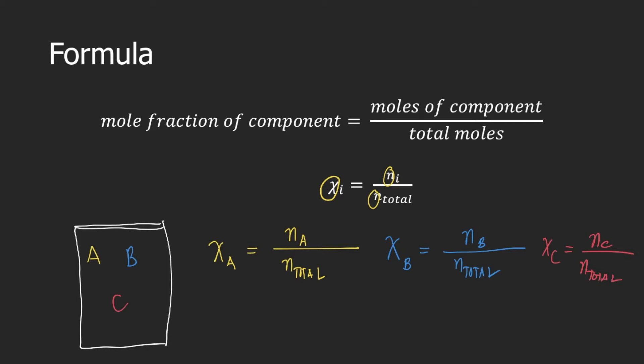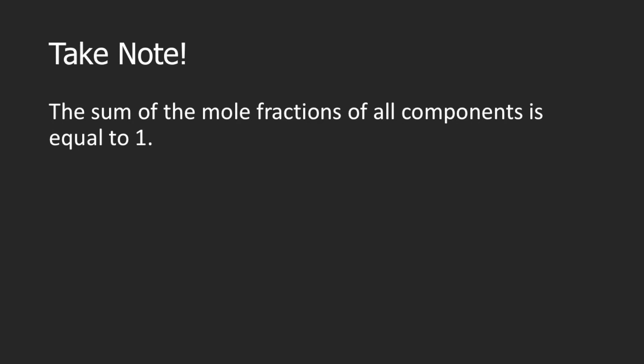And how do you compute the total moles? This is just the sum of the moles of all components. So with three components a, b, and c, n total would be moles of a plus moles of b plus moles of c. Now I want you to take note of this very important statement: the sum of the mole fractions of all components is equal to 1.